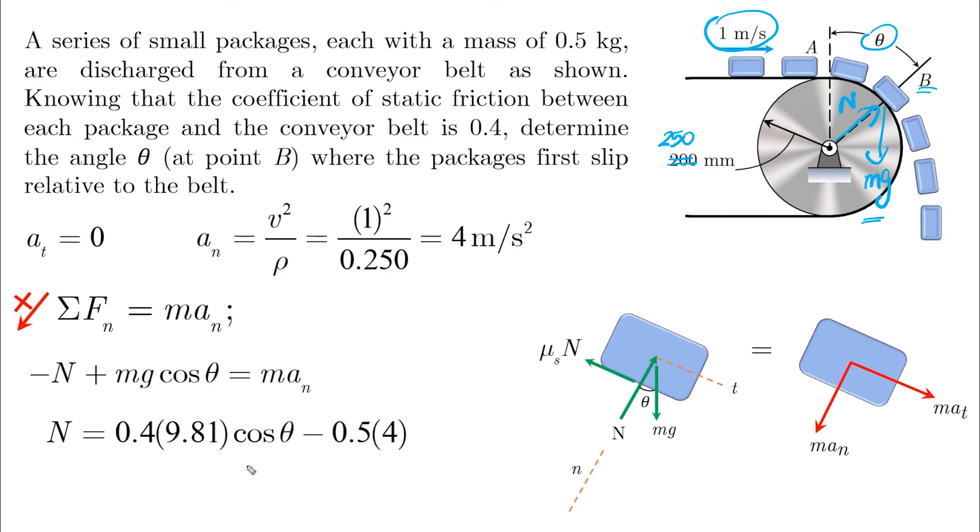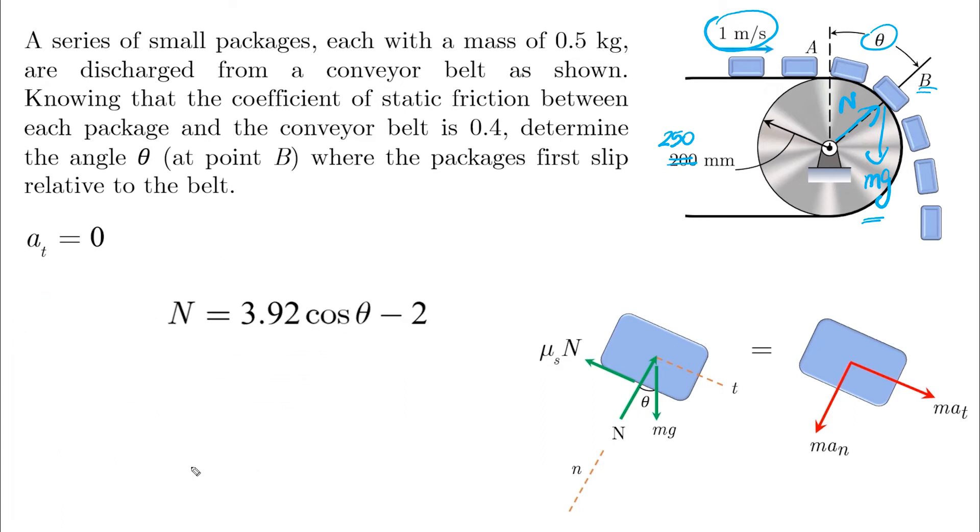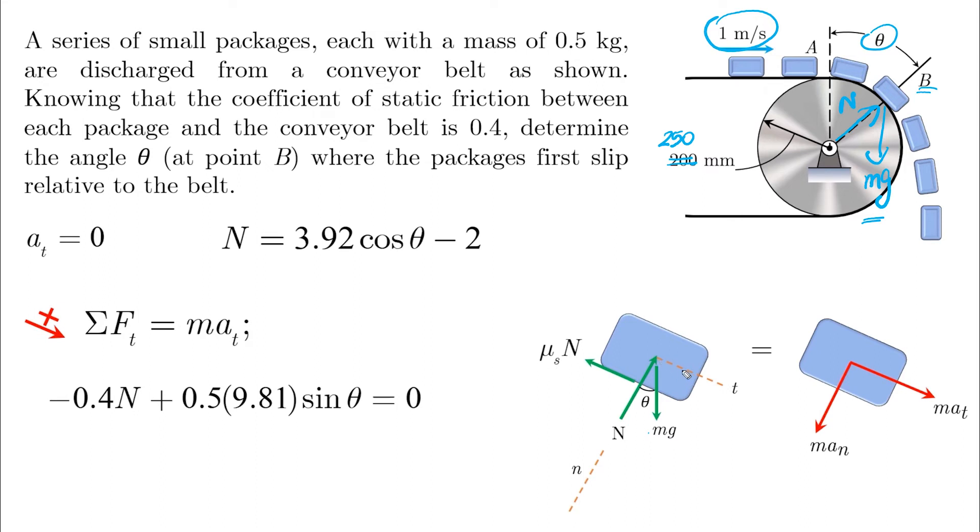And if we keep this equation and look at the summation of forces in the tangential direction, we will find the following. We have μs times N in the negative direction, we have the component of mg which is sin θ in the positive direction, and this is equal to 0 because a_tangential is equal to 0. And it results in N as also a function of θ.